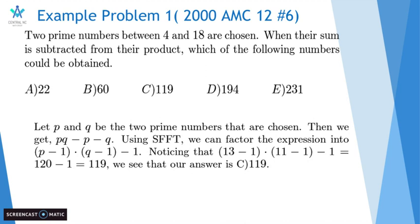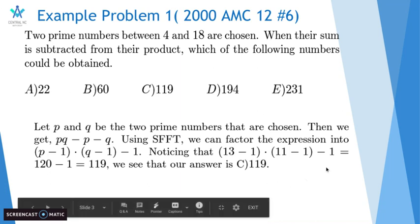Noticing that 1 less than 13 minus 1 times 11 minus 1 is 120 minus 1 equals 119, we see that our answer is C) 119. This is a basic application of Simon's favorite factoring trick, and after you get the factoring down, it's just easy trial and error. And this is easy because the coefficient on the pq term is 1, and the coefficients on the p and q's are only negative 1.